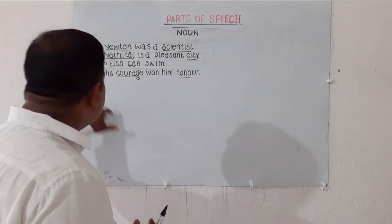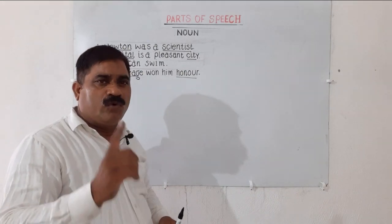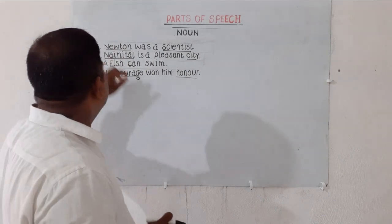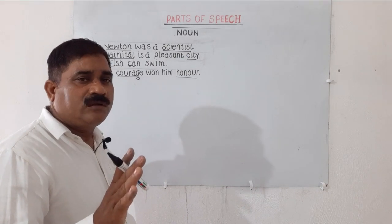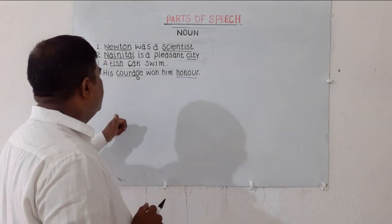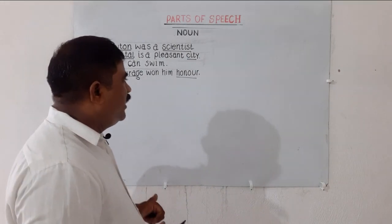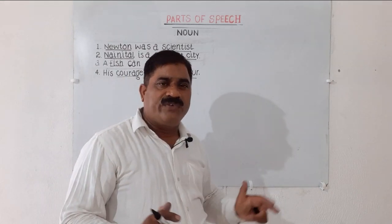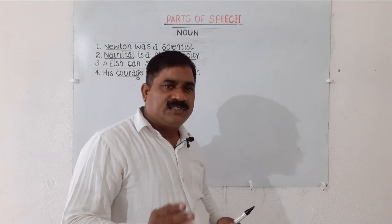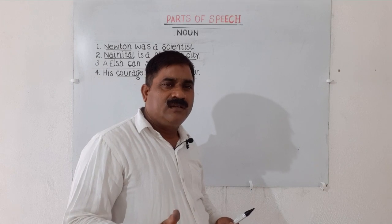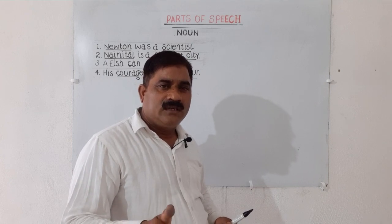So these underlined words stand for person — Newton and scientist stand for person; Nanythal and city stand for place; fish, courage, and owner stand for things. So we can say words that stand for person, place, and thing are called a noun.